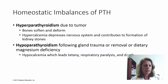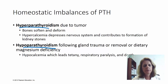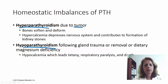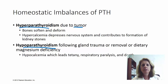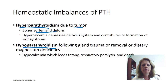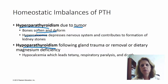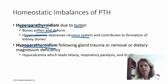Let's talk about too much and too little — hyperparathyroidism and hypoparathyroidism. Hyperparathyroidism is usually caused by a tumor, so you have too much parathyroid hormone. You're taking too much calcium out of the bones, so your bones can soften and be deformed. Also, too much calcium in the blood — hypercalcemia — actually depresses the nervous system and can cause the formation of kidney stones. Kidney stones may be a warning sign of a PTH imbalance.